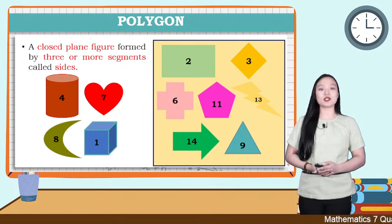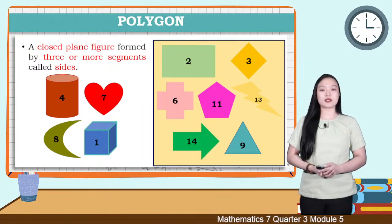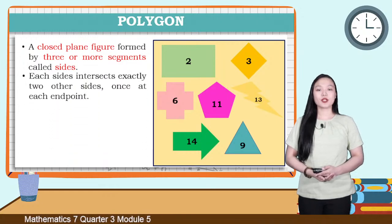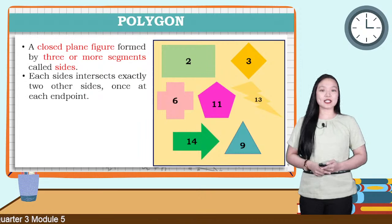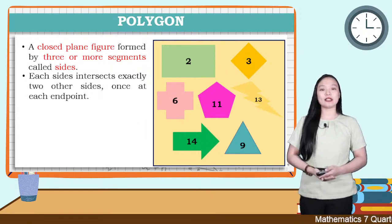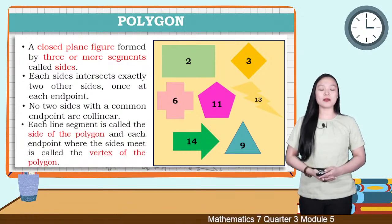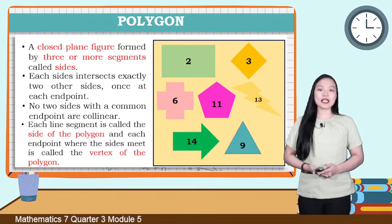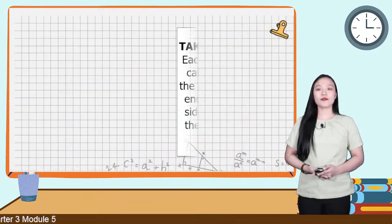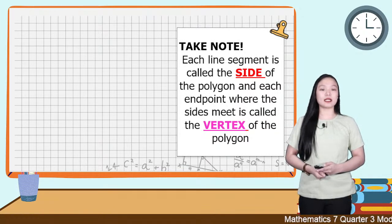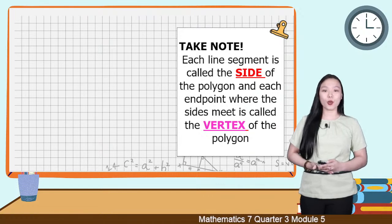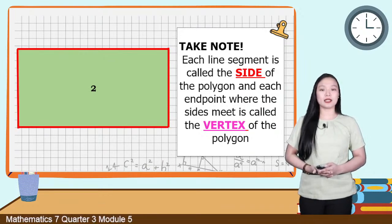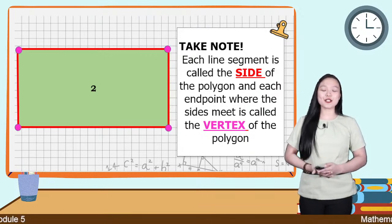Also, figures 4 and 1 are not plane figures — a flat surface with 2 dimensions: length and width — but they are 3-dimensional figures. When we talk about polygons, remember that each side intersects exactly two other sides at each endpoint. No two sides with a common endpoint are collinear. Each line segment is called the side of the polygon, and each endpoint where the sides meet is called the vertex of the polygon. These are the sides of the polygon, and these are the vertices of the polygon.